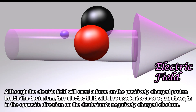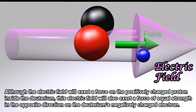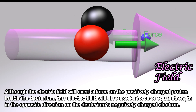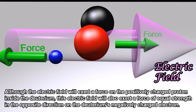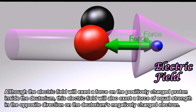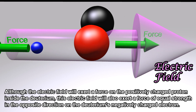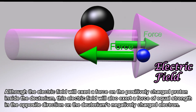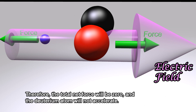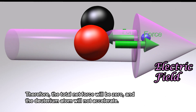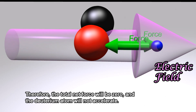The electric field will exert a force on the positively charged proton inside the deuterium. This electric field will also exert a force of equal strength in the opposite direction on the deuterium's negatively charged electron. Therefore, the total net force will be zero, and the deuterium atom will not accelerate.